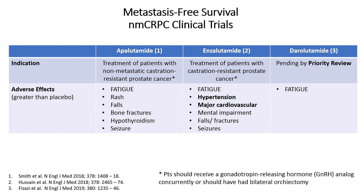If we look at the adverse effects seen in the trials — which is important because whenever you approve a drug it's a risk-benefit determination — the adverse effects are many that you can predict when you take androgens away from male patients, and each drug has its own unique set of adverse effects. In particular, enzalutamide has several cardiovascular effects, which was interesting because patients were excluded from this trial if they had any predetermined cardiovascular abnormalities. Darolutamide's main adverse effect was fatigue.